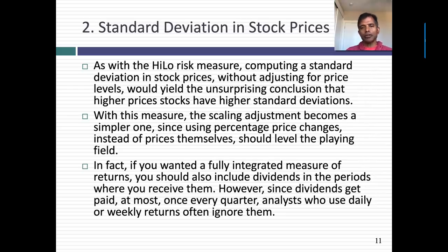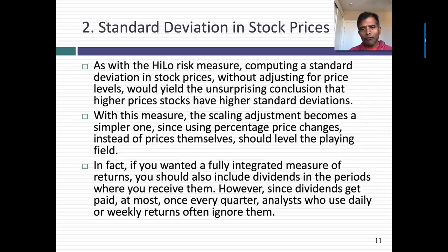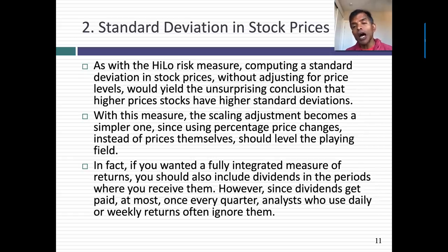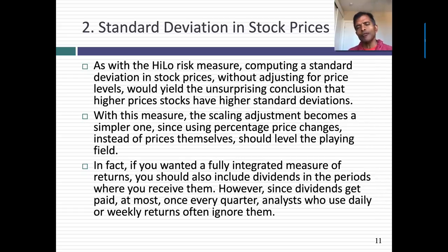The second price-based measure of risk is to look at the standard deviation in stock prices. Whenever you have data over time — in this case stock prices — you can compute the standard deviation. To make them comparable and readable, it's better to state those standard deviations in annualized terms. To avoid biasing yourself toward finding higher-priced stocks to be riskier, it's better to compute standard deviation in returns — using change in prices or log prices — which converts stock prices into a scale variable that's comparable. The leap of faith you're making is that stocks with more volatile prices are riskier than stocks where prices are more stable.